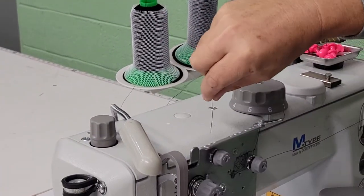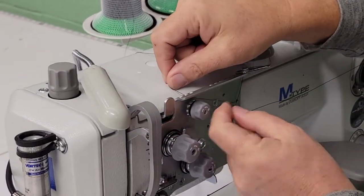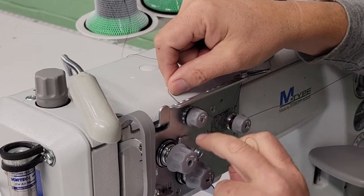Through any of the three holes above the tensioners. Through between the two discs on the first tensioner.